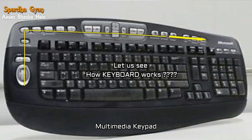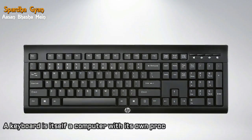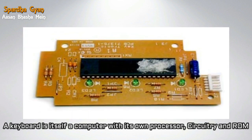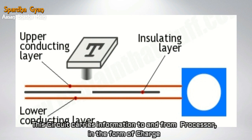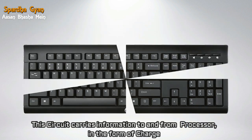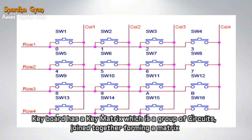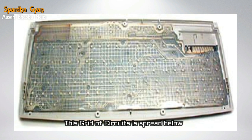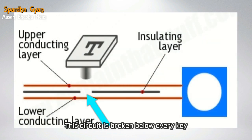Now, let's see how the keyboard works. A keyboard is a small computer. It has a processor and a circuit which carries information from the processor. There is a very important part in it, which is a small circuit that makes a key matrix. This key matrix is a grid of a circuit — a grid of the keypad. Under each key, this circuit is broken.